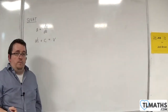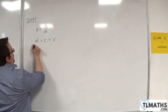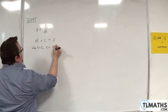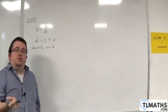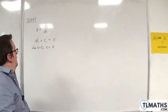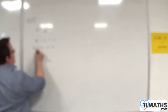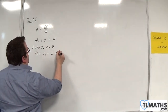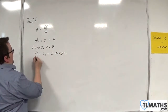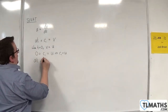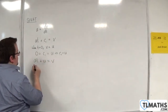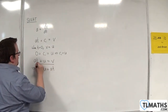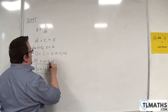We know that initially, when t is equal to 0, the velocity is going to be equal to u, because we're using u to represent the initial velocity. So we've got a times 0 plus c1 is equal to u, so c1 must be u. Therefore we have at + u = v, or v = u + at. And that is one of our SUVAT equations.